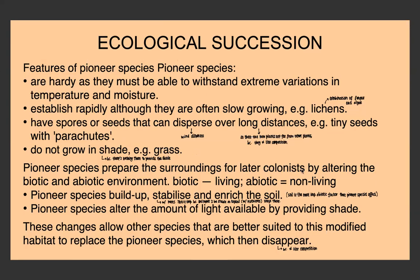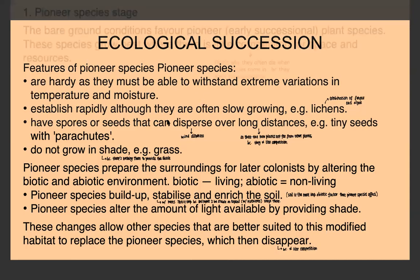Pioneer species prepare the surroundings for later colonists by altering the biotic and abiotic environment. They build up, stabilize, and enrich the soil — if there was no soil before, pioneer species would actually produce the soil, and if there was soil, they'd stabilize and add nutrients. Their roots are usually what stabilize the soil. Soil is the most important abiotic factor that pioneer species affect. They also alter the amount of light available as they might provide shade. These changes allow other species, better suited to the now modified habitat, to come in and replace the pioneer species, which will usually disappear because they don't like competition.